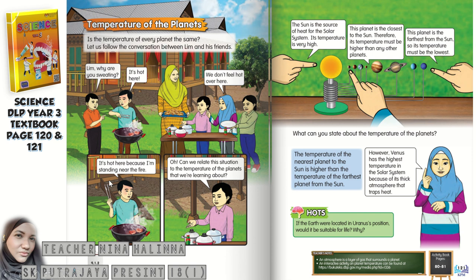It's hot here because I'm standing near the fire. Can we relate this situation to the temperature of the planets we're learning about? On the next page, this is a model of the solar system — the sun and the eight planets. The sun is the source of heat for the solar system; its temperature is very high. The only source of heat in the solar system is the sun.